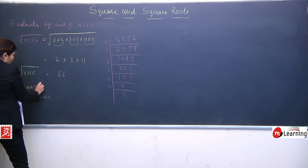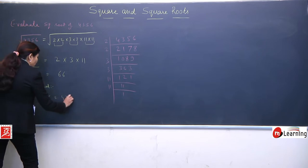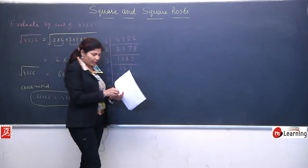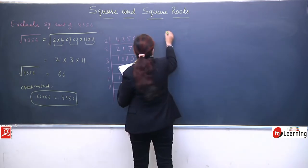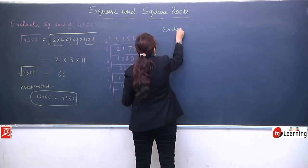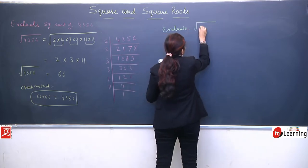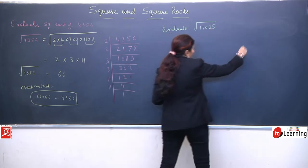If you have doubt that we did it wrong, you can use the check method. 66 into 66 should equal 4356. If it doesn't, it means we made a mistake somewhere.